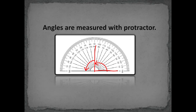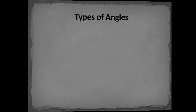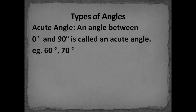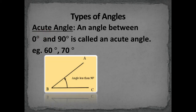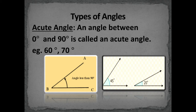The first type of angle is the acute angle. As the name suggests, acute means very less or very small. Any angle whose measure lies between 0 degrees and 90 degrees is called an acute angle. For example, 60 degrees, 70 degrees, 45 degrees, and 20 degrees are all acute angles.